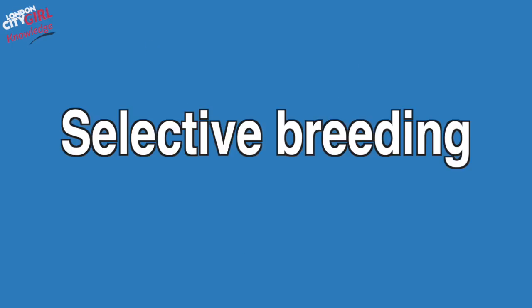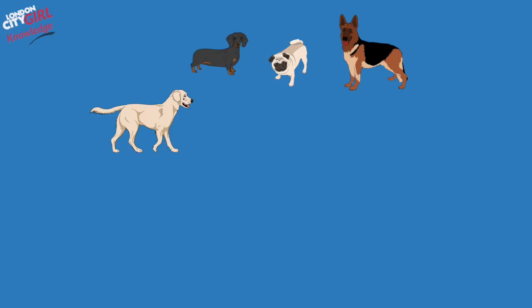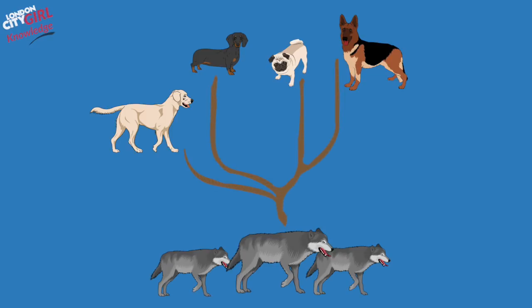All the dogs that we have today were descended from one group of grey wolves. Breeders selected the wolves with the most desirable physical and behavioural traits and allowed them to mate. So over time, those desirable traits became more and more pronounced. More and more specialised breeding led to all the breeds of dogs we see today, from Labradors to pugs.